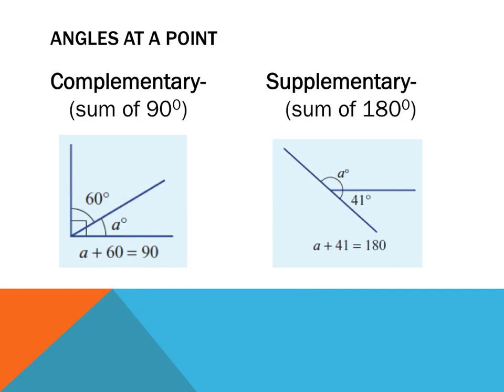The opposite or the alternative for complementary is supplementary. Instead of adding up to 90, they add up to 180. So if you've got this one here, we've got a straight angle here. You've got 41 degrees in here. You've got A degrees in here. The whole thing adds up to 180. So the supplementary angle of 41 degrees is going to be 139 degrees, because 139 plus 41 is 180. So complementary add up to 90. Supplementary add up to 180.